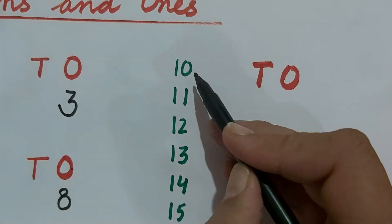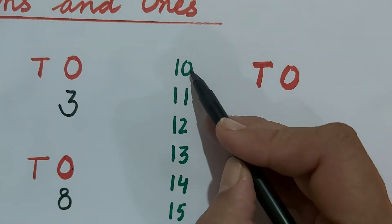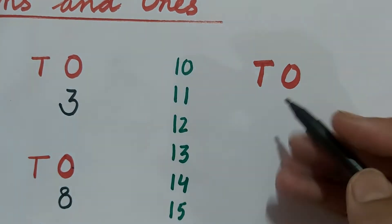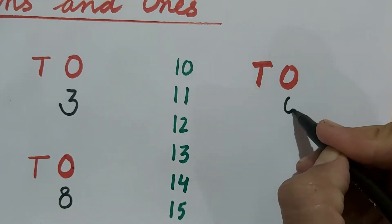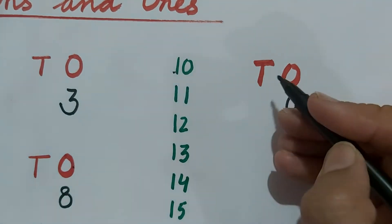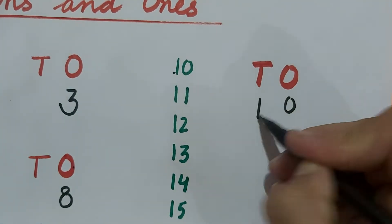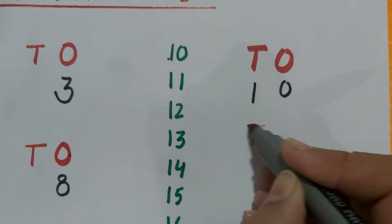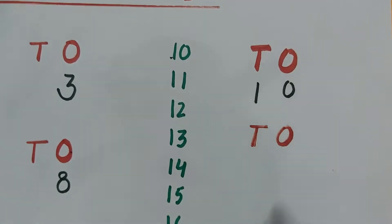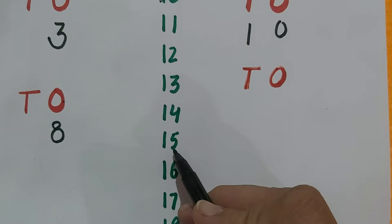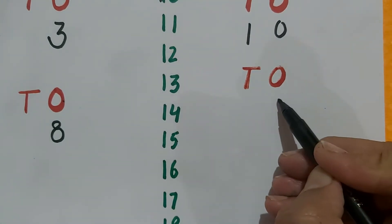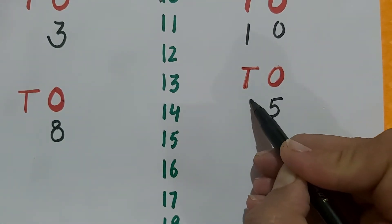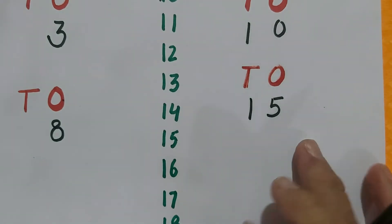The left side number comes under tens and the right side number comes under ones. For example, if I have to write 15, then this 5 will come under ones and 1 will come under tens.